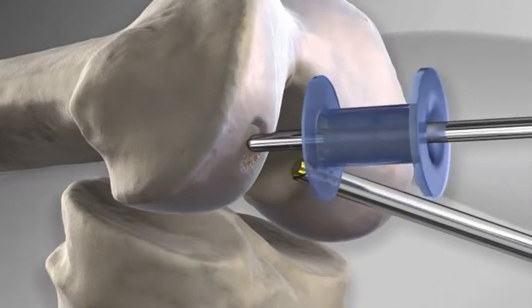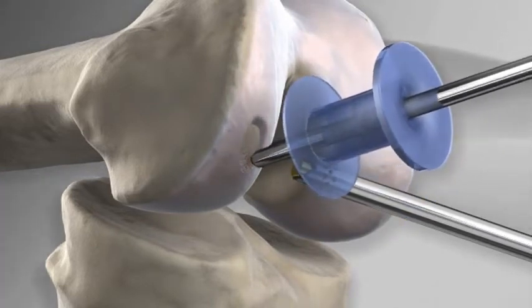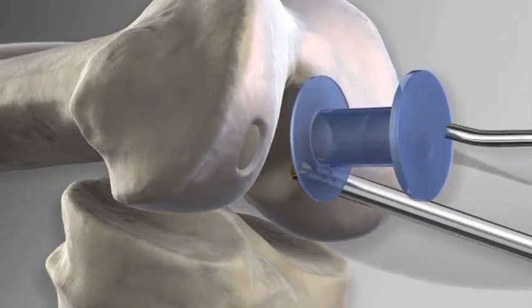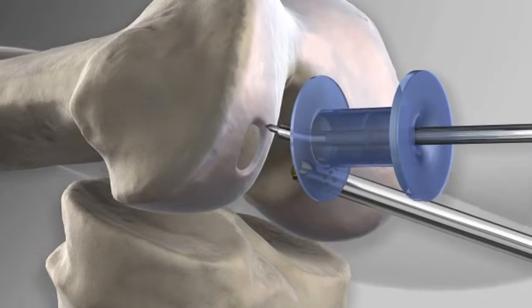The area of diseased cartilage is smoothed with a shaver down to subchondral bone. A rim of stable cartilage is created around the lesion and a chondral pick is inserted into the knee.